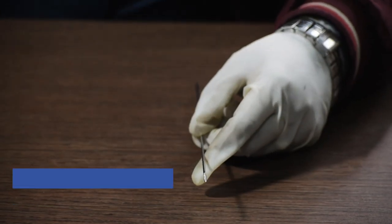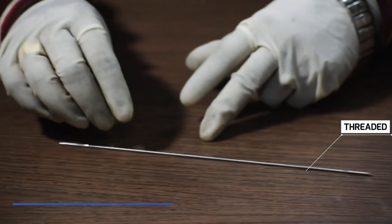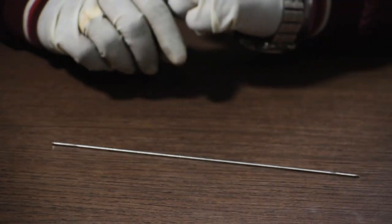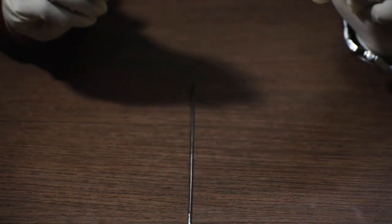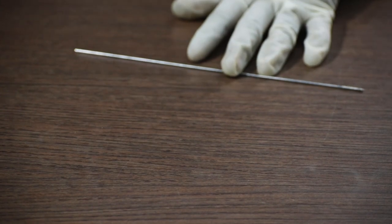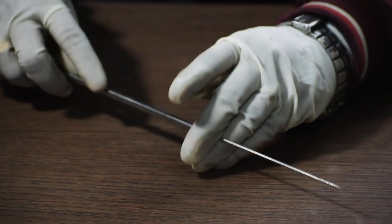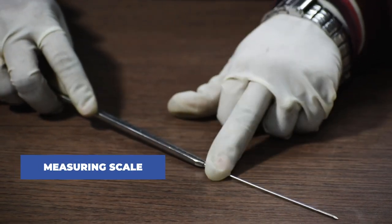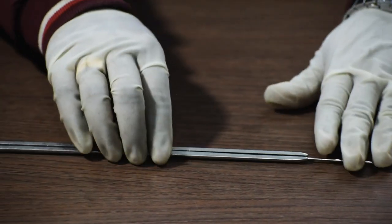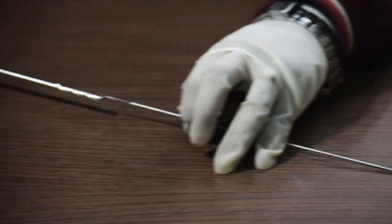Now, for the derotation screw, we will first use a 1.8mm guide wire. Then we take the measurement with the help of a measuring scale.